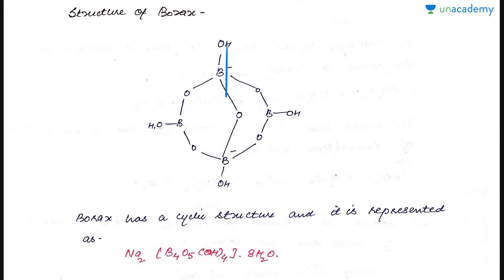The sp2 boron atoms have a simple trigonal planar geometry and the sp3 hybridized boron atoms have a tetrahedral geometry. Borax has a cyclic structure and it is represented by the formula Na2B4O5(OH)4·8H2O.